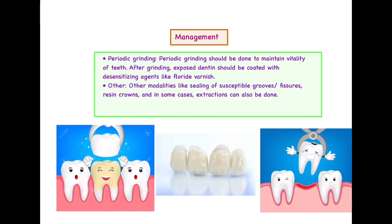After periodic grinding, we have removed a layer of enamel and opened up the dentinal tubules which are sensitive to thermal changes. Therefore, a desensitizing agent — particularly fluoride varnish — needs to be applied to seal the dentinal tubules and prevent dentinal hypersensitivity. Other treatment modalities include sealing of susceptible grooves and fissures, resin crowns, and in worst cases extraction — though extraction is the last choice, only when the tooth cannot be saved.